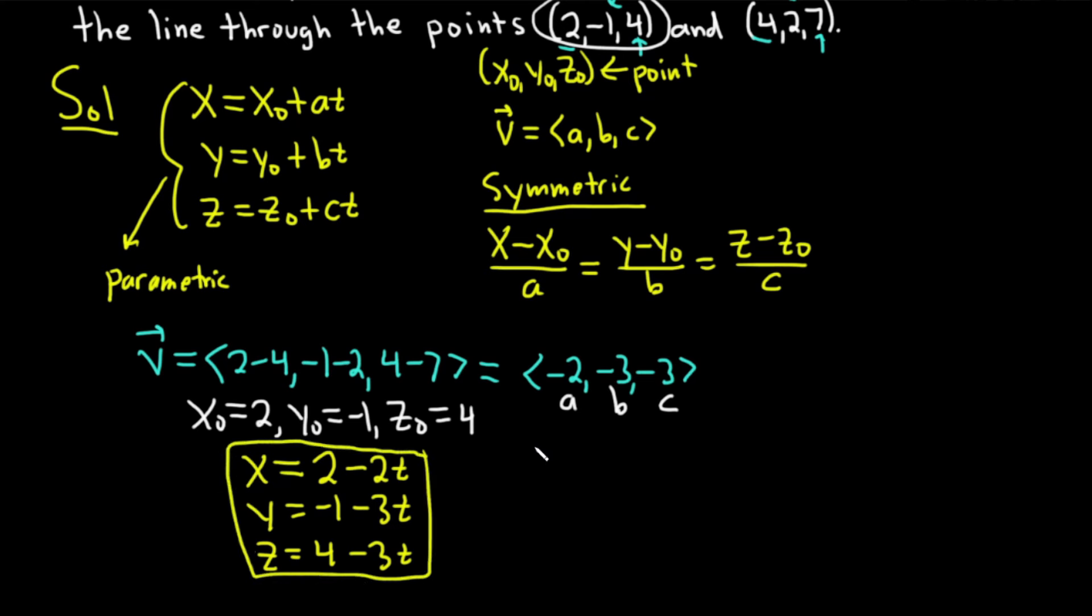And for the symmetric ones, we just have (x - x₀), so (x - 2), over a, which is -2, equals (y - y₀), so (y + 1), because it's double negative, over -3. And then we have (z - z₀), so (z - 4), over -3. And you can leave your answer like this.